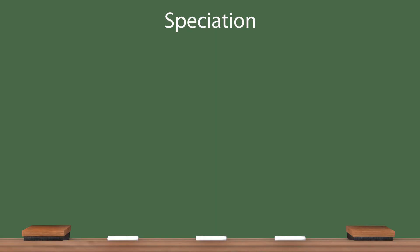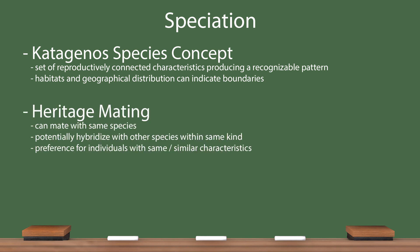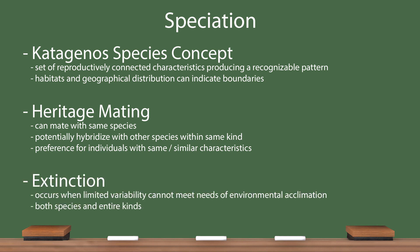The second section of the model I would like to look at is speciation. Although speciation occurs, a change in form does not occur. Species have a recognizable set of surface characteristics that are reproductively connected. Because speciation is driven by environmental acclimation, habitats and geographic boundaries will help determine species. Species are able to and prefer to mate with others of the same species, but they can potentially hybridize with other species of the same kind if necessary. Extinction of a species occurs when the species is no longer able to acclimate to changing environments due to limited genetic variation.